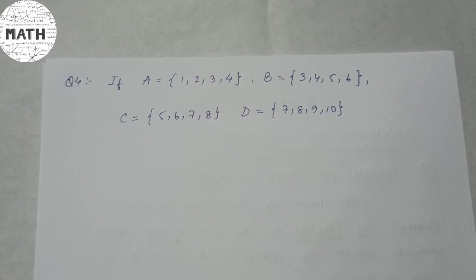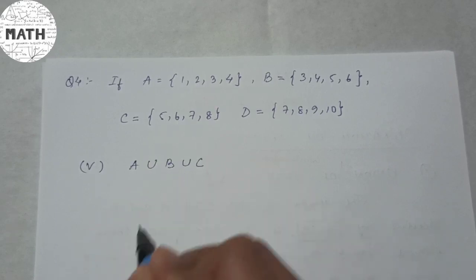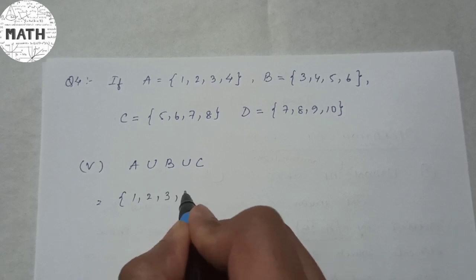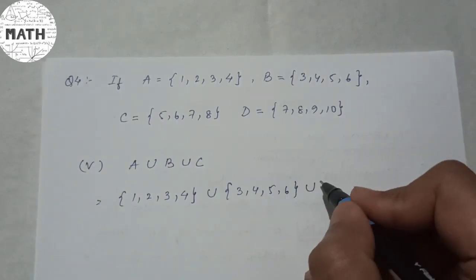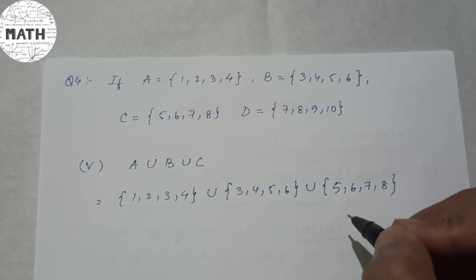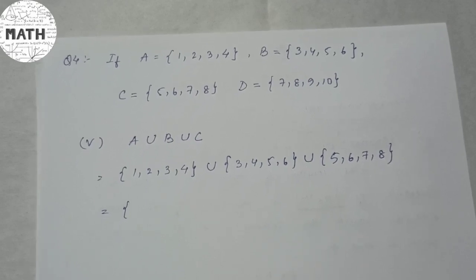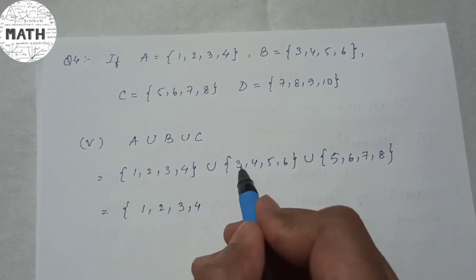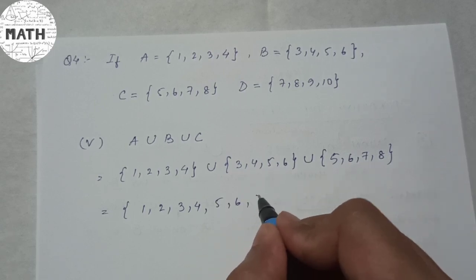Question 5: Find A union B union C, where A = {1, 2, 3, 4}, B = {3, 4, 5, 6}, and C = {5, 6, 7, 8}. Union means combination, and in a set each element appears only once. So combining all three: 3 and 4 appear in A and B, 5 and 6 appear in B and C, so the answer is {1, 2, 3, 4, 5, 6, 7, 8}.